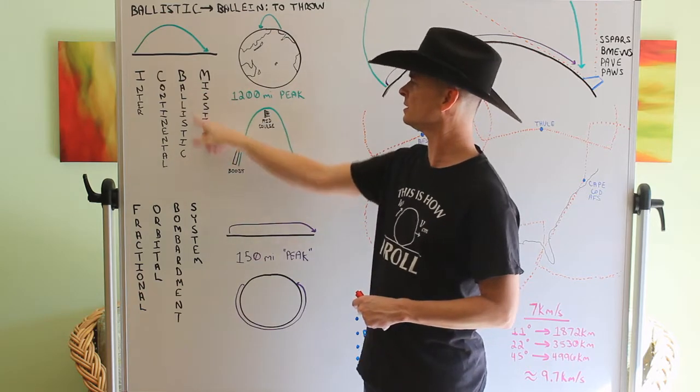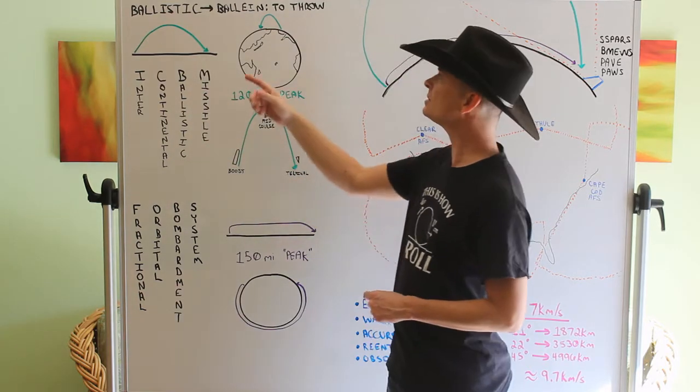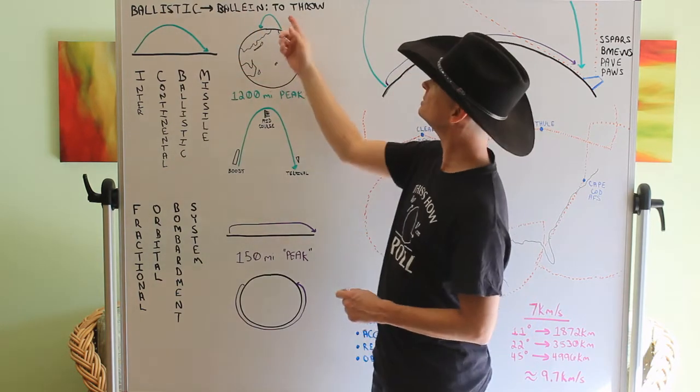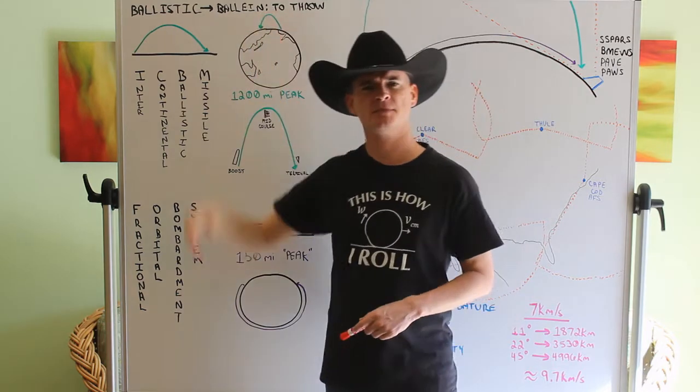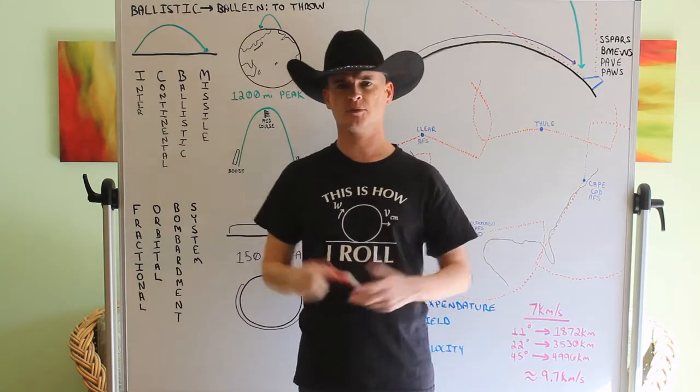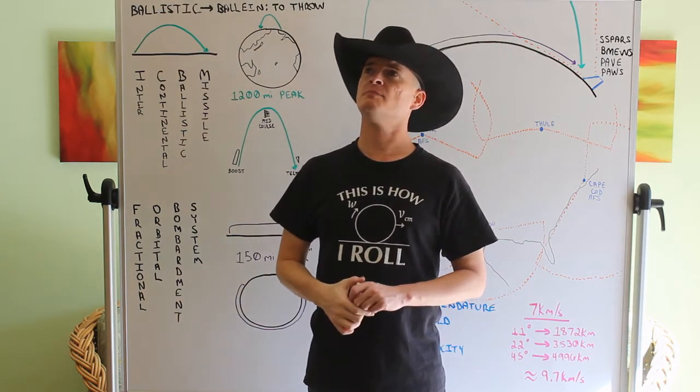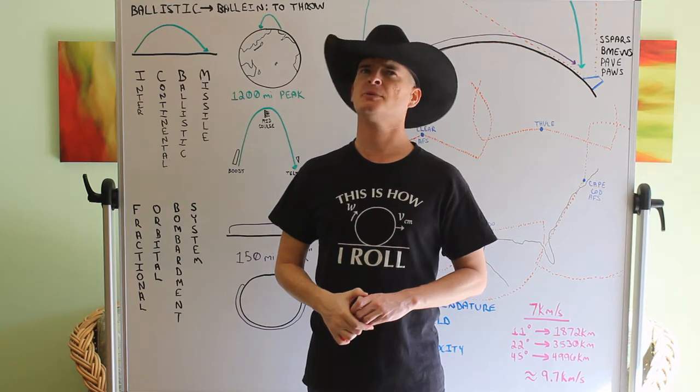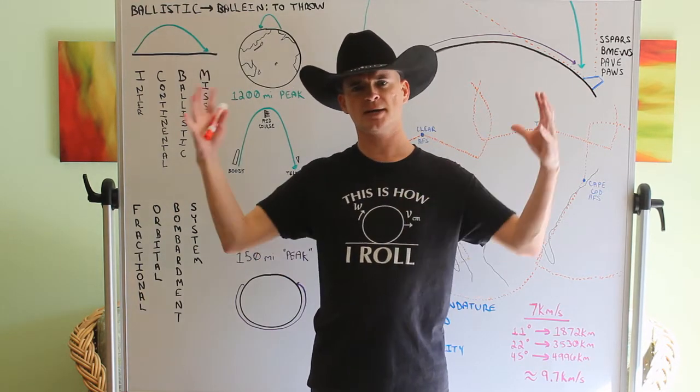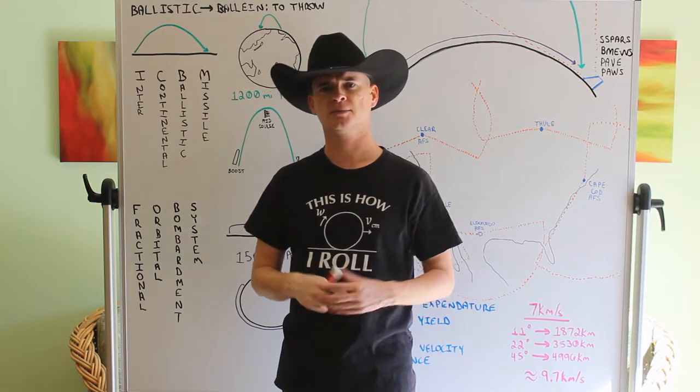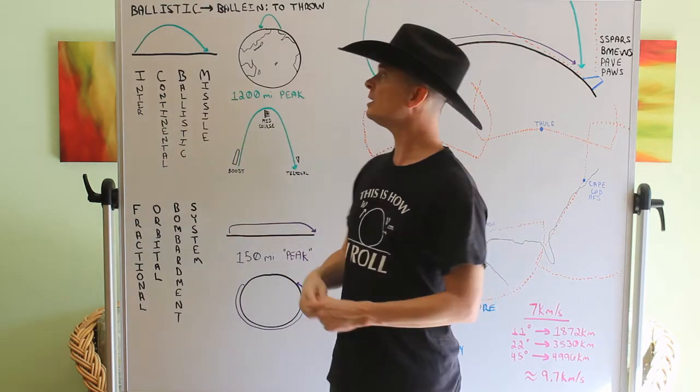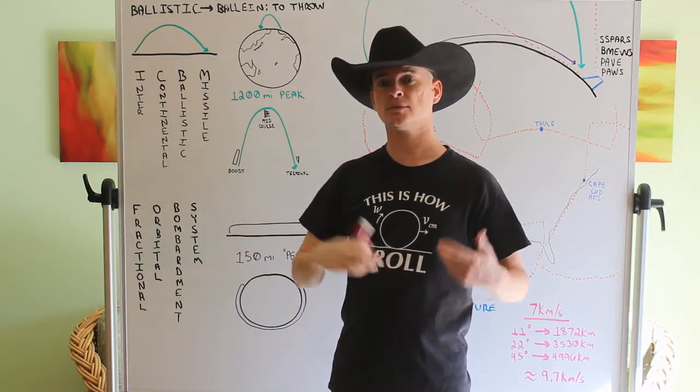The important part of the name here is the ballistic part. We get ballistic from the Greek ballein, I think, and that means to throw. For example, if you've ever played Age of Empires 1 or maybe 2, they had a unit called a ballista. It would throw giant arrows essentially. So it's like a giant crossbow on wheels and it would throw bolts.